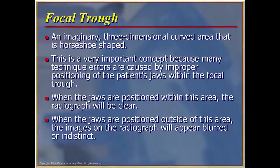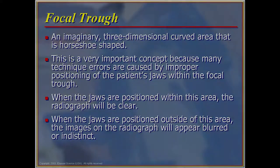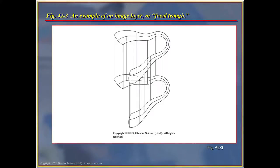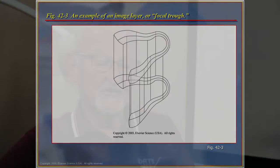The focal trough is an imaginary three-dimensional curved area that is horseshoe shaped. This is a very important concept because many technical errors are caused by the improper positioning of the patient within the focal trough. If the patient is placed appropriately in the machine, the pictures will come out very clear and definable. However, if the patient's head is not positioned properly in the focal trough, the entire film will be distorted and unusable.